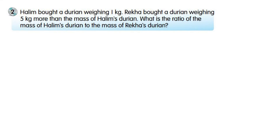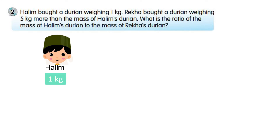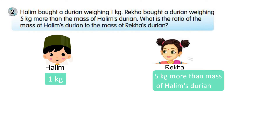Look at question number two. Halim bought a durian weighing 1 kilogram. Reka bought a durian weighing 5 kilograms more than the mass of Halim's durian. What is the ratio of the mass of Halim's durian to the mass of Reka's durian? Understand the problem: the mass of Halim's durian is 1 kg, and Reka's durian is 5 kg more than Halim's.